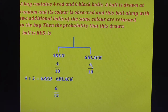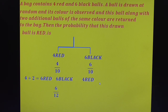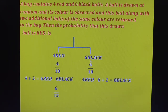In the second case, you have chosen a black ball. Now add 2 additional black balls to the bag. Therefore, the black ball count becomes 6 plus 2, which equals 8. The red ball number remains the same at 4. So in this case, we have 4 red balls and 8 black balls in the bag.